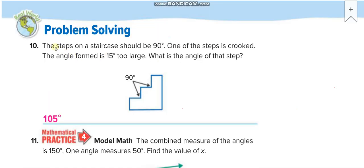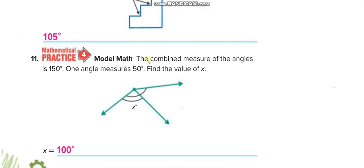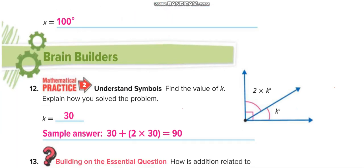The step on a staircase should be 90 degrees. You can see straight lines, 90 degrees. One of the steps is crooked—the angle formed is 15 degrees too large. So 90, it means 15 degrees larger than 90. 90 plus 15, that is 105 degrees. Here the combined measure of the angles is 150 degrees. From this one to this one it is 150 degrees. One of the angle measures is 50. If one of them is 50, of course we have to minus it from the total one. So we will find the value of x, which is 150 minus 50, that is 100.